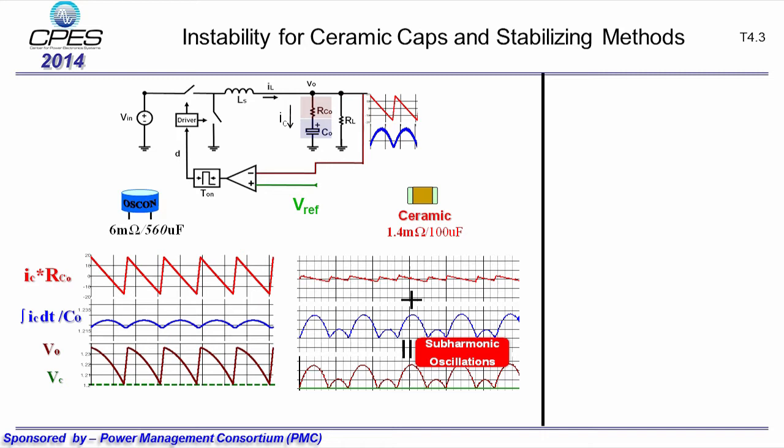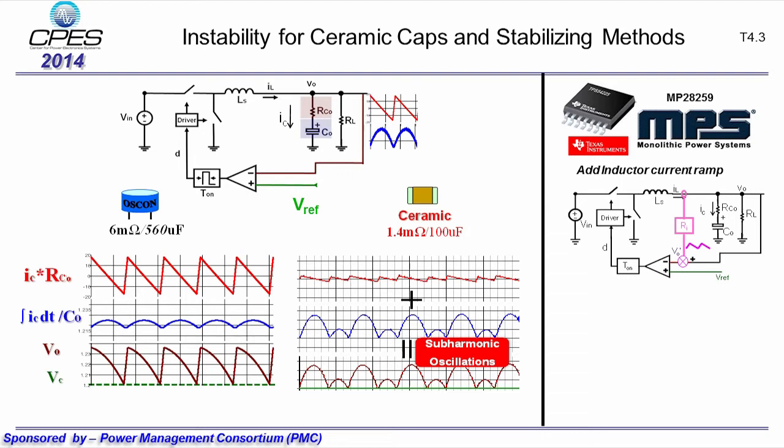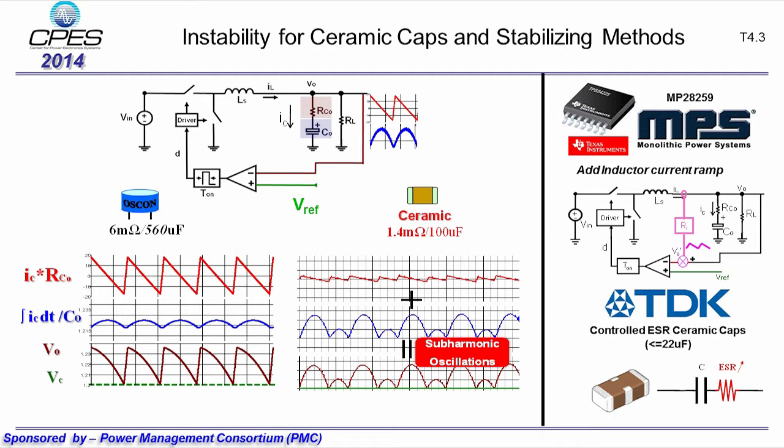Industry products use additional inductive current to stabilize the circuit. Alternatively, capacitor companies such as TDK provide a series of controlled-ESR ceramic caps, letting customers customize ESR to stabilize the circuit. For understanding and designing purposes, it is ideal to develop a small-signal equivalent circuit model. In this approach, the output voltage is separated into inductive current feedback, capacitor voltage feedback, and load current feedback.